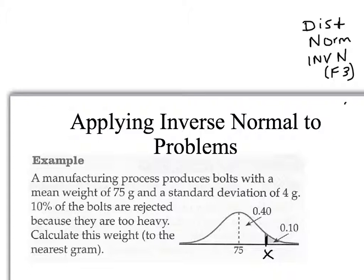On your calculators, we do it slightly differently. Go to Statistics, number 2, then to Distribution, F5, Normal, F1. But instead of using F2, which we used before, we're going to go to F3, which is Inverse Normal.